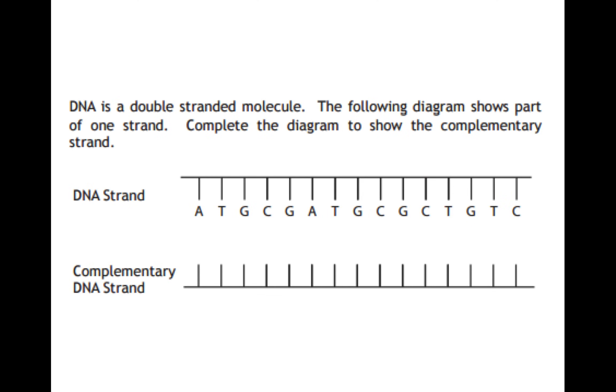This is a very common question and a reason why you have to know all of these complementary bases. You could be given a DNA strand and you have to give the complementary DNA strand at the other end. For example, in this long line here of A, T, G, C, G, A, T, G, C, G, C, T, G, T, C, your complementary base would be T, A, C, G, C, T, A, C, G, C, G, A, C, A, G. Just remember that A matches with T and C matches with G and you'll always get the mark for these questions.